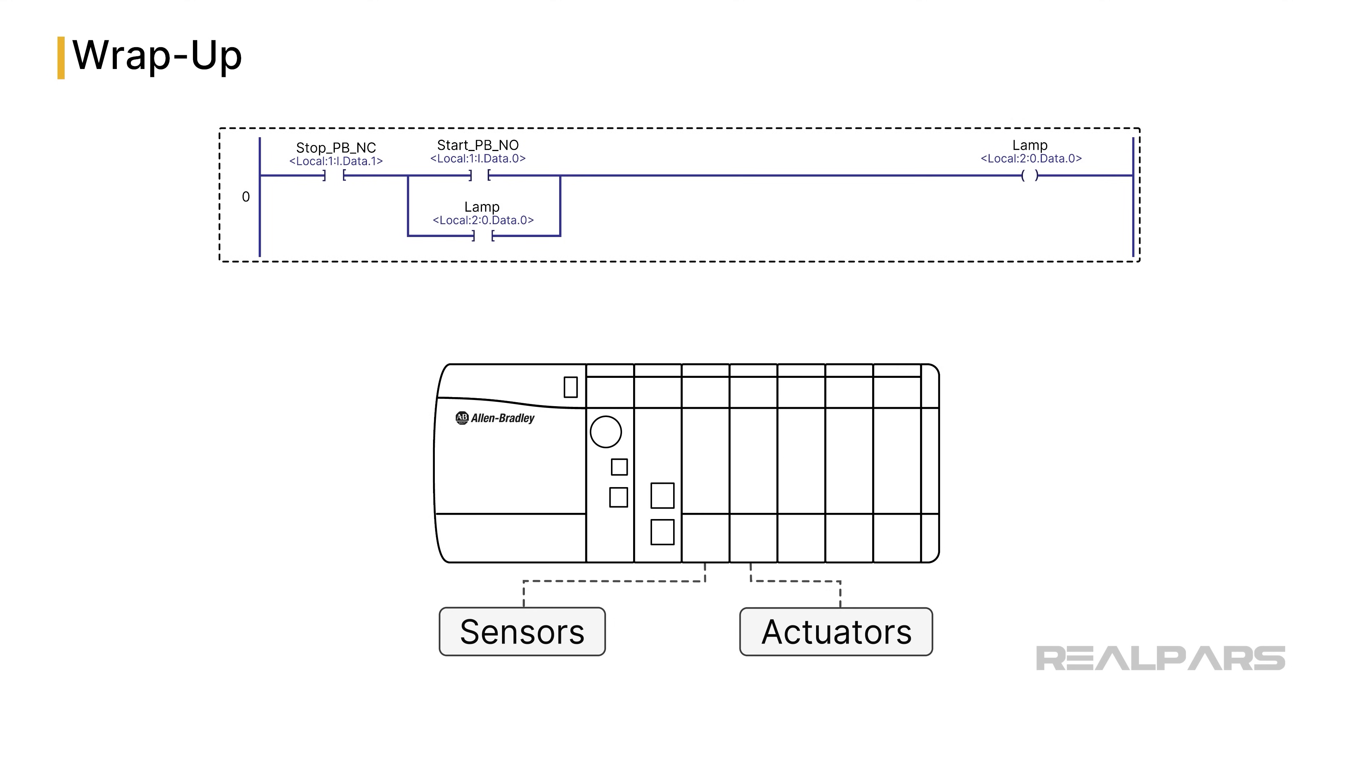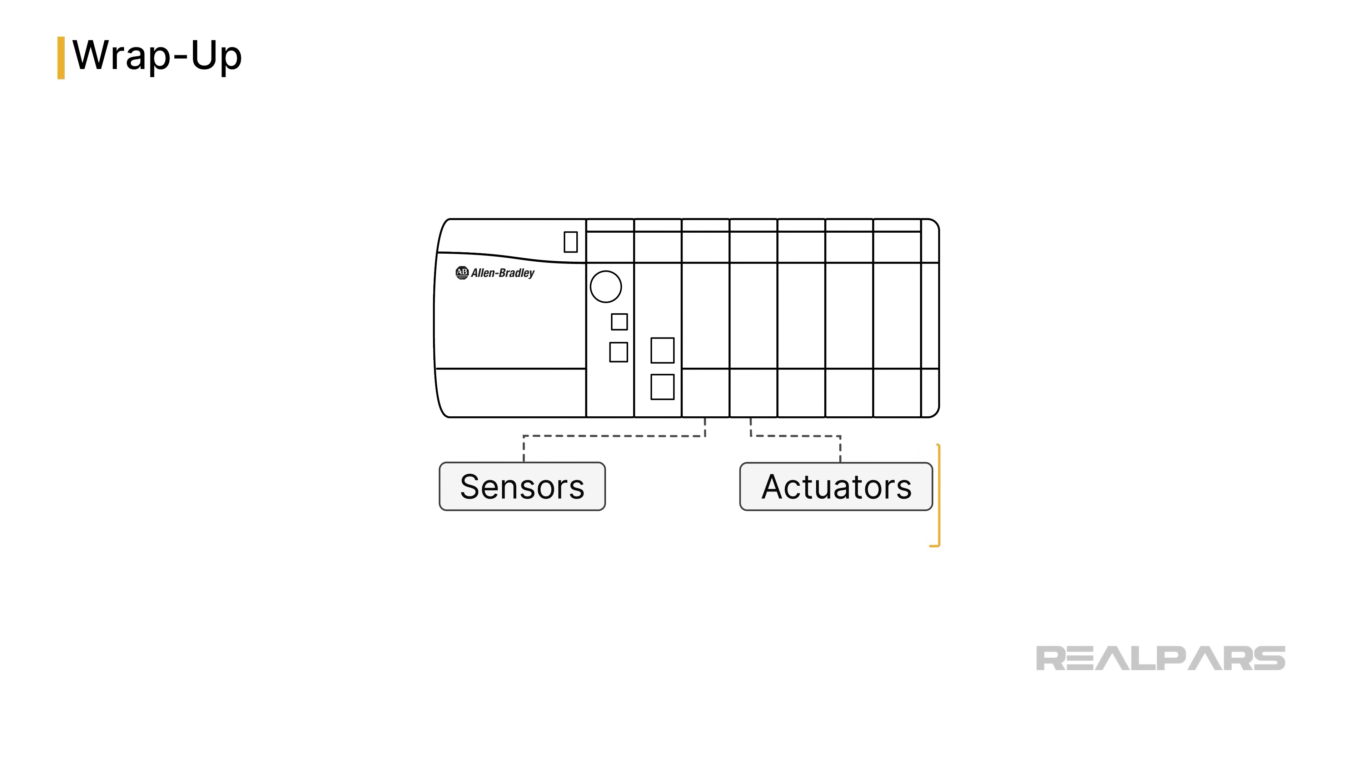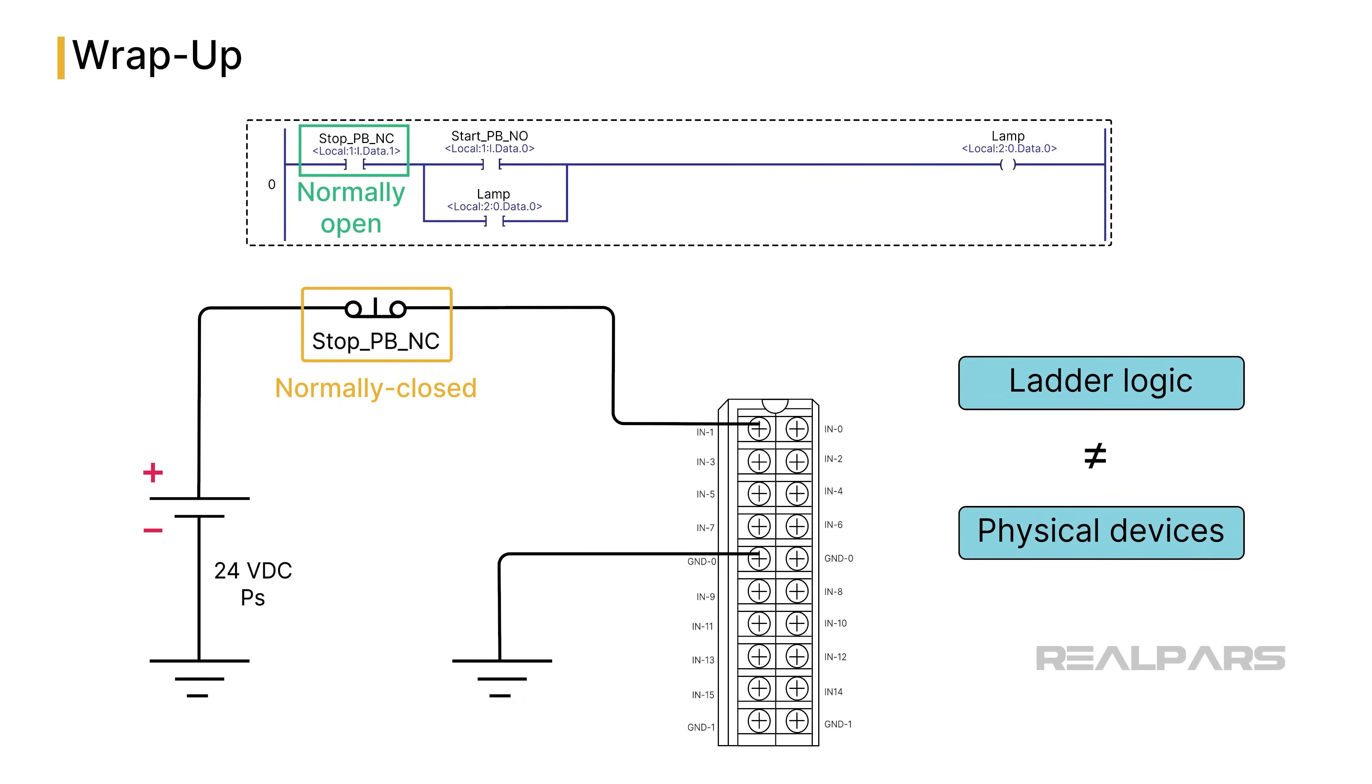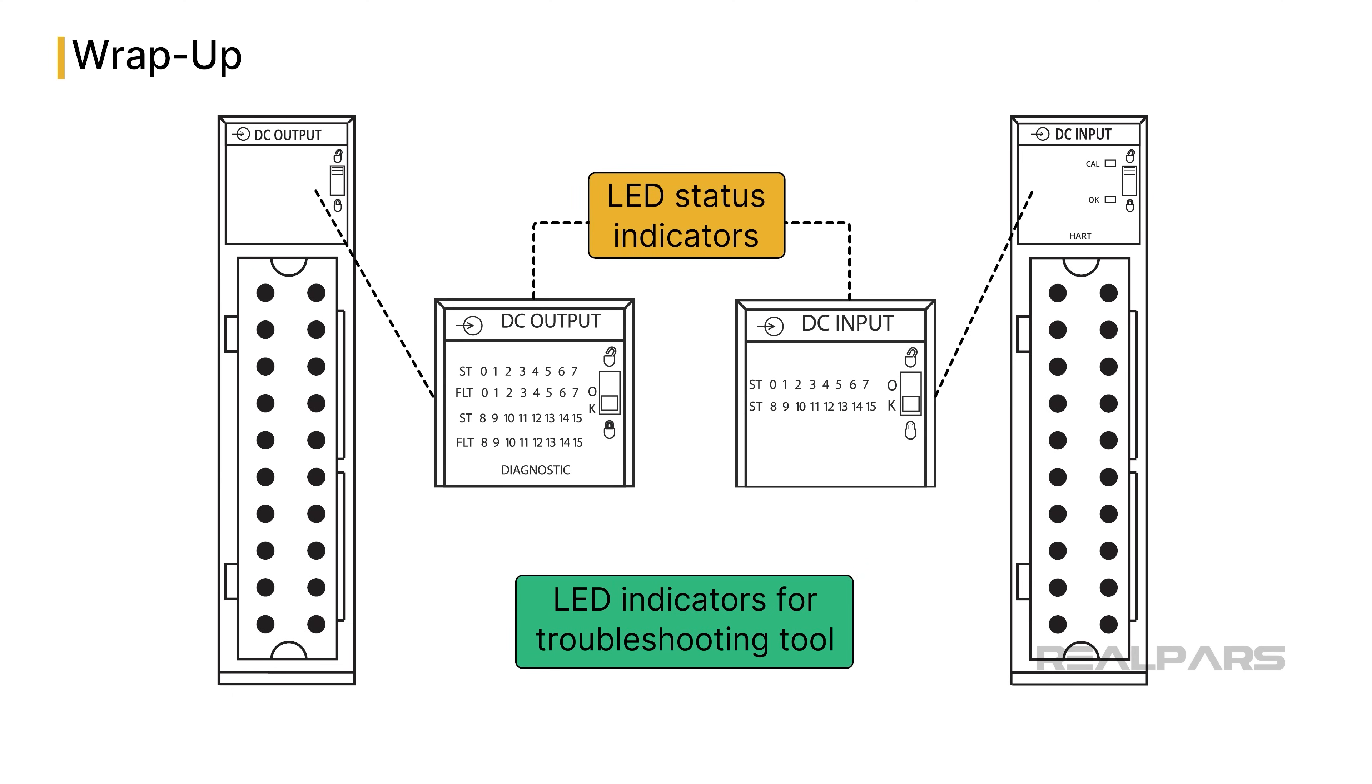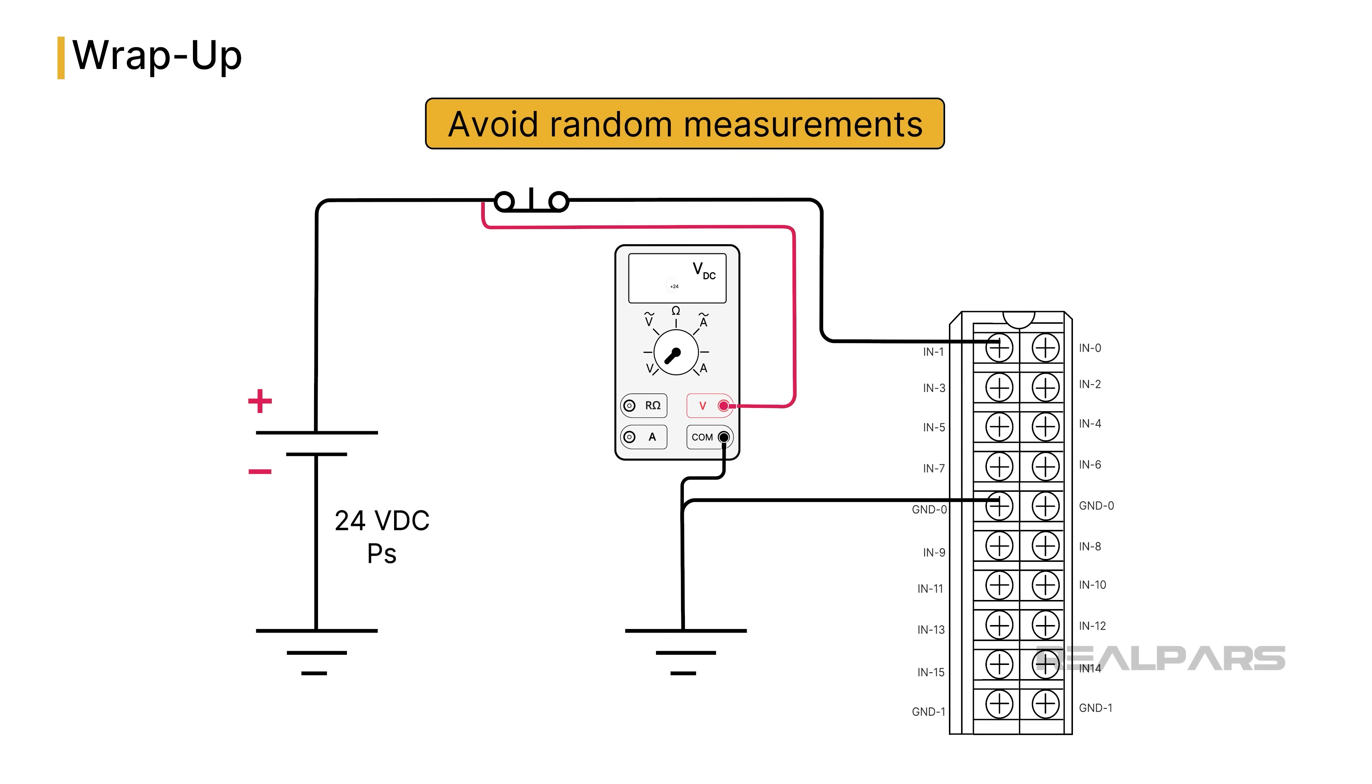Okay, let's summarize what we've discussed. PLC programs rarely are the cause of failures. Field devices, such as sensors and actuators, are the most common cause of failures, followed by faulty PLC I/O modules. Up-to-date drawings are essential to any testing and troubleshooting activities. PLC ladder logic symbols don't always match the associated physical field device. Input and output module LED indicator panels are a powerful troubleshooting tool. Don't take any measurements if you don't know what you expect. And taking random measurements serves no purpose.